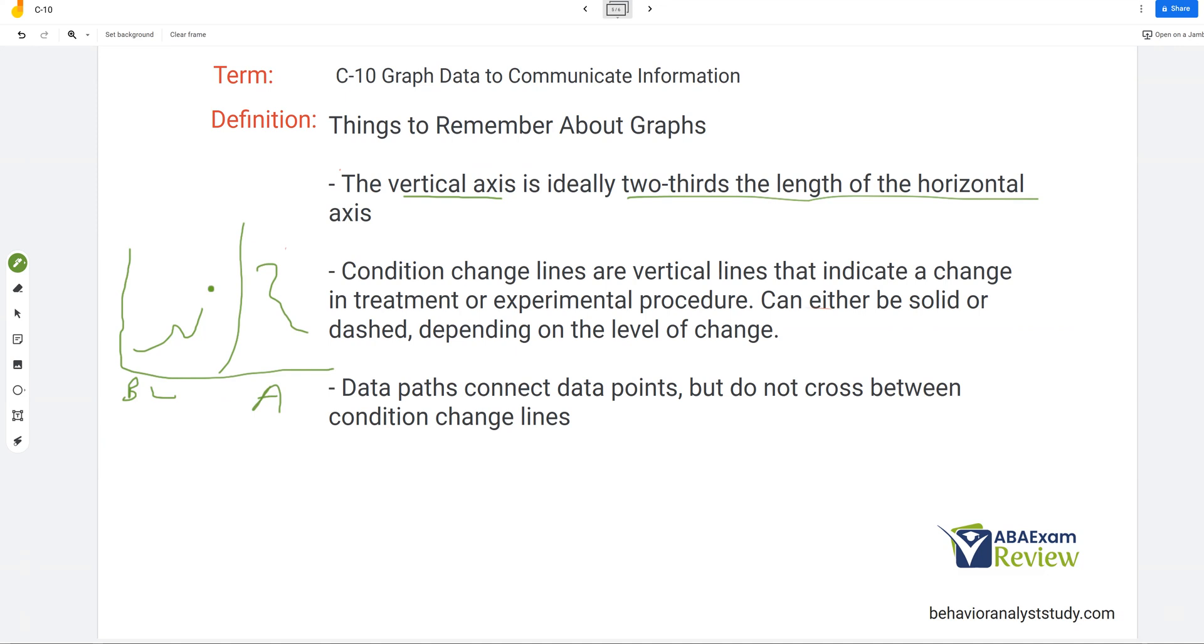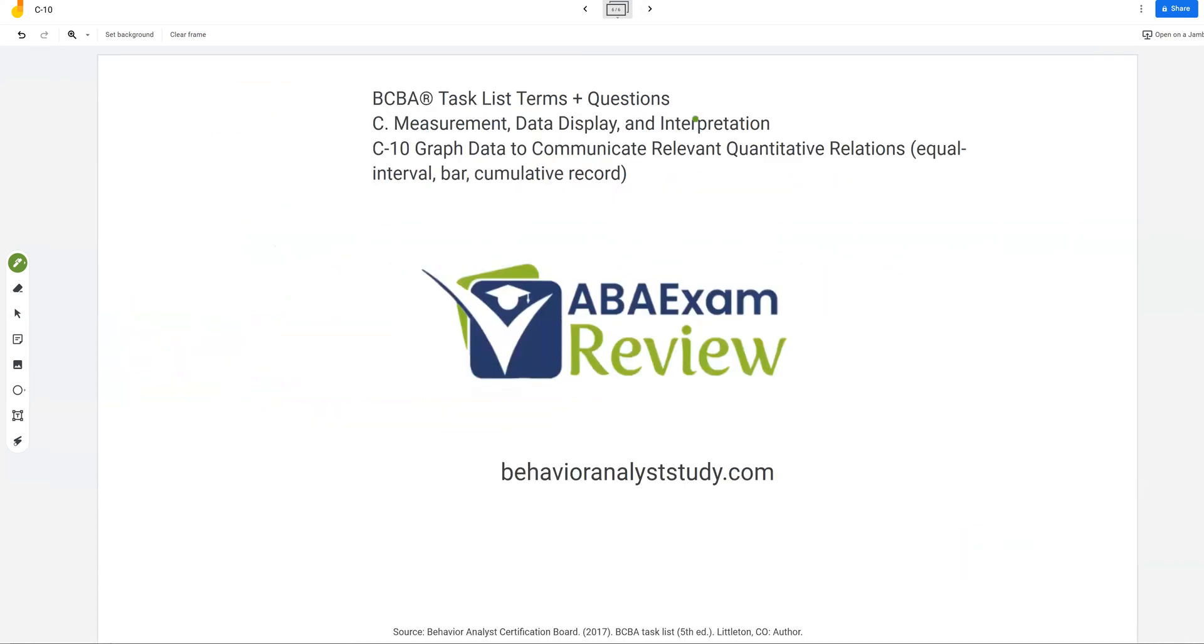They can be solid. They can be dashed depending on the level of change. And then data paths connect data points but do not cross between condition change lines. You can see as we change condition, our data path stops and restarts. That's really it. Graphing data to communicate relevant quantitative relations. Understand why we graph. Understand the necessity of graphing. Understand we use visual analysis. And understand how you're going to communicate these graphs to stakeholders. You're typically going to be using a line graph but know why cumulative records exist. Know about bar graphs and know why scatter plots exist. Why do we use scatter plots? Pretty much as simple as that.